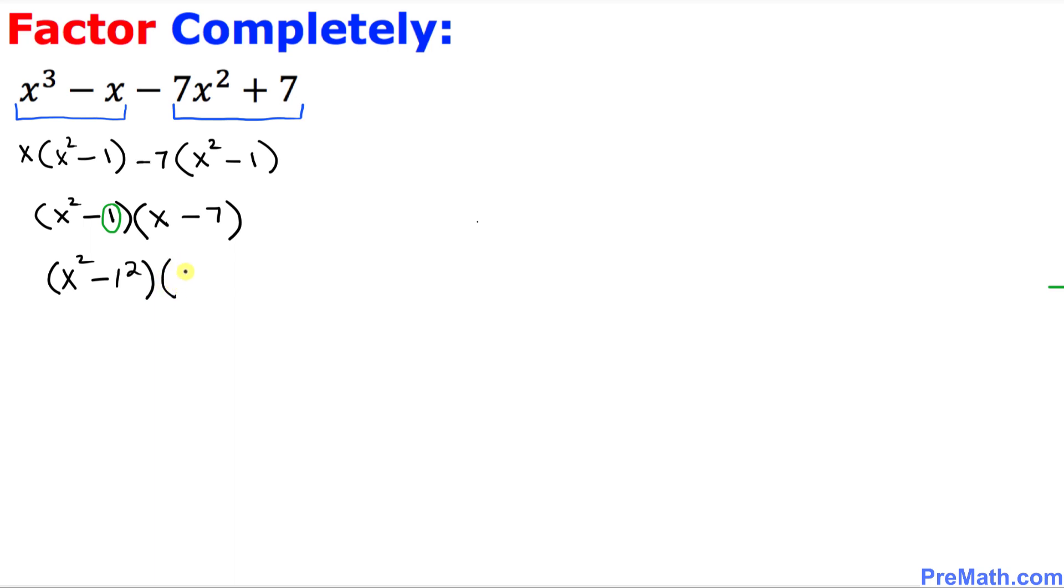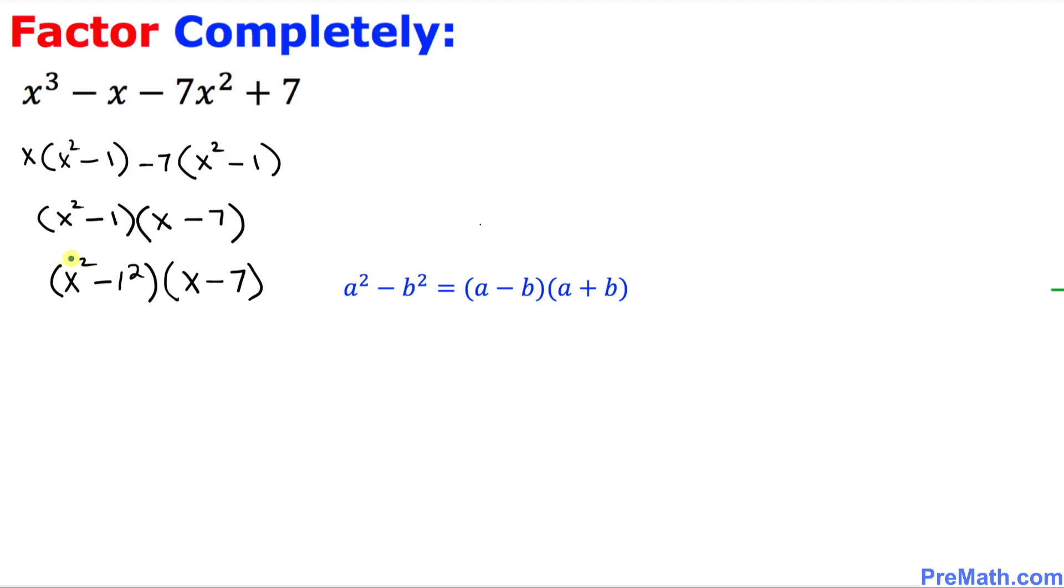As we can see, the first parenthesis, x squared minus 1 squared, this is the difference of 2 squares. So we're going to be using this well-known formula: a squared minus b squared equals a minus b times a plus b. In other words, the difference of 2 squares is equal to the product of the difference and the sum.